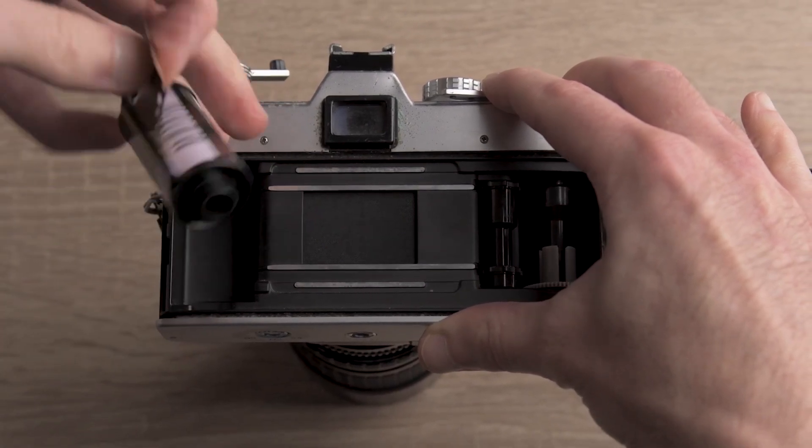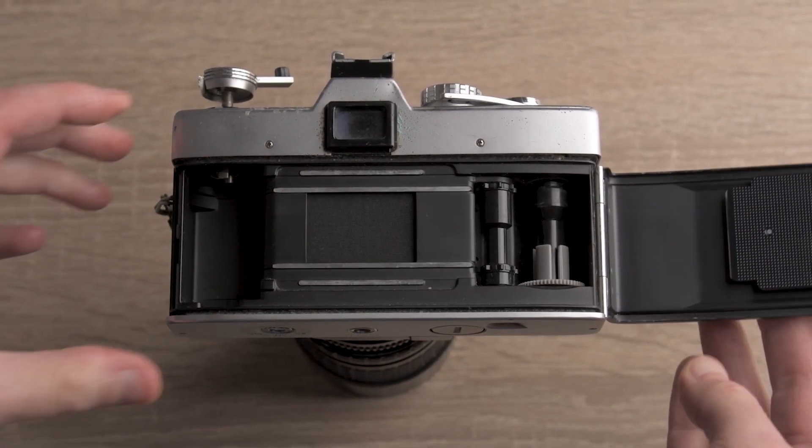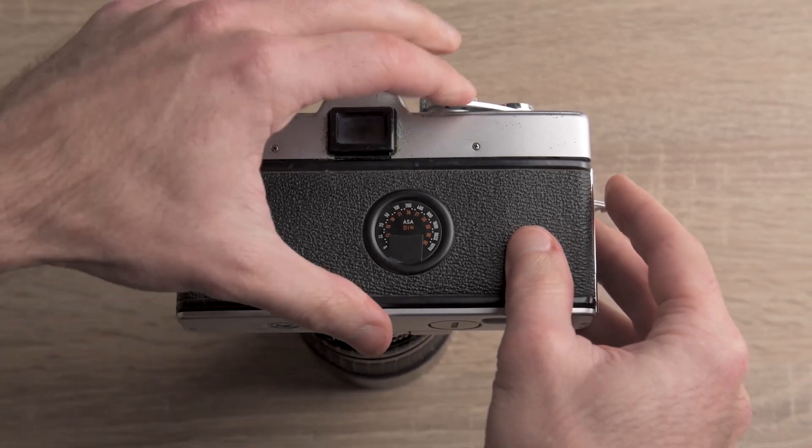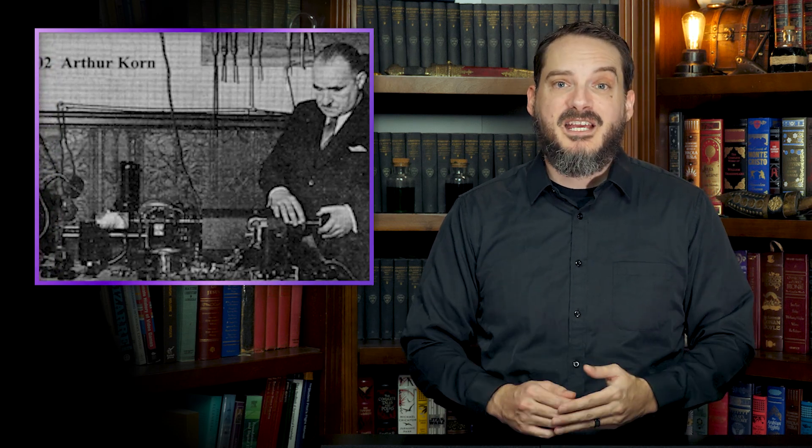Photographic images have been captured and transmitted electrically since at least the 1880s when inventors like Shelford Bidwell, Arthur Korn, and Elisha Gray developed the first practical facsimile or fax machine. In the 20th century, this would be developed into wire photo machines used by news agencies to quickly transmit photographs for publication.